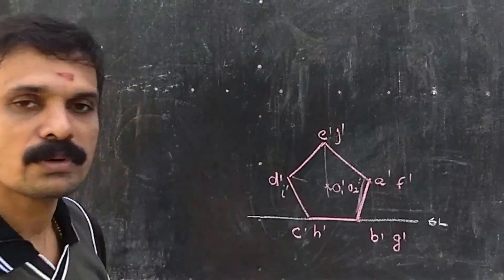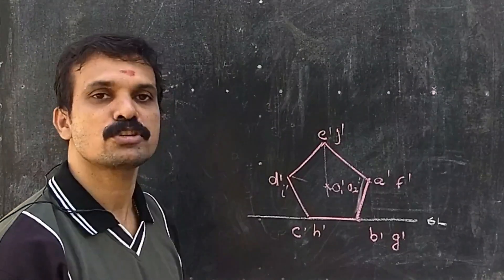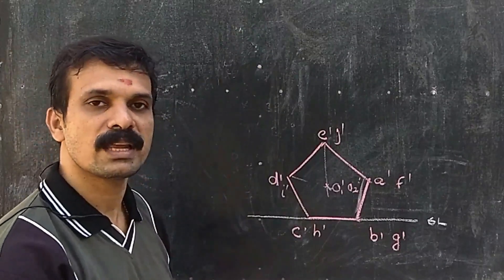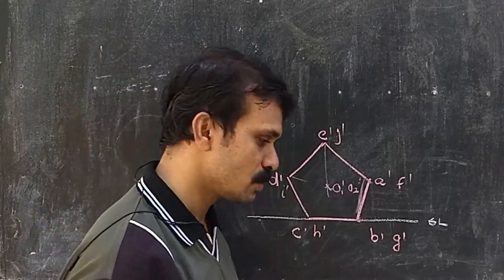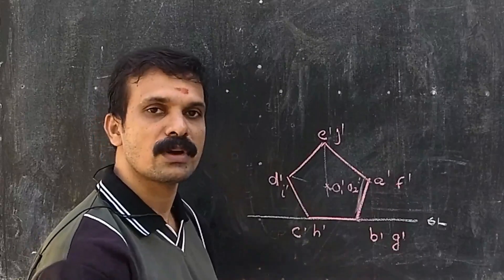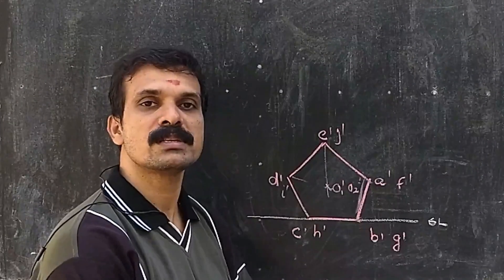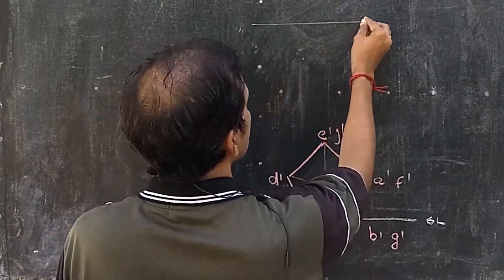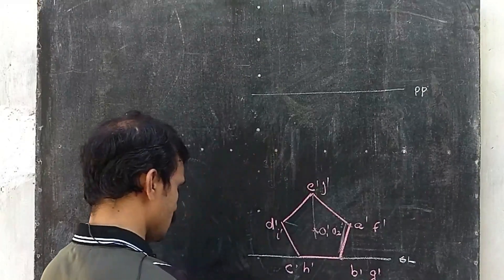The front view has been completed. Now we have to obtain the position of the picture plane. The distance between the ground line and the picture plane should be greater than the sum of the station point positions. The station point is 52 mm in front and 25 mm above the ground plane, so 52 plus 25 equals 77, so a distance of 80 mm — we can draw the picture plane now.